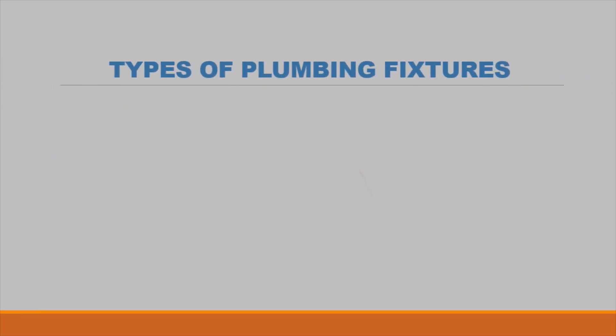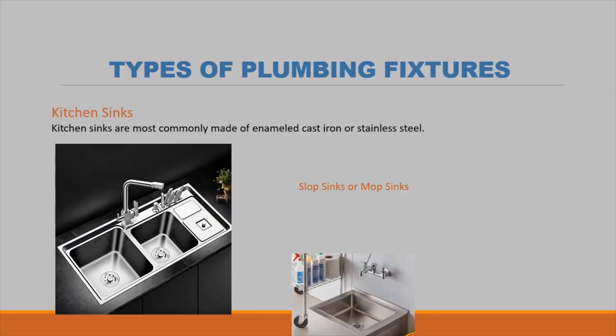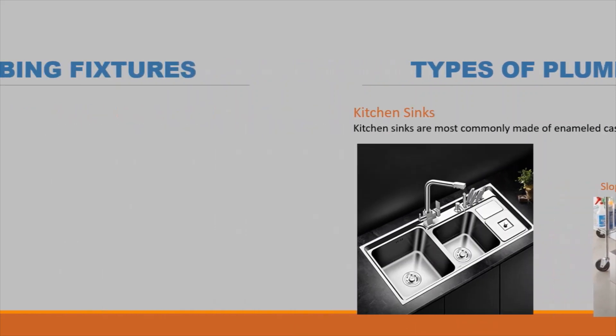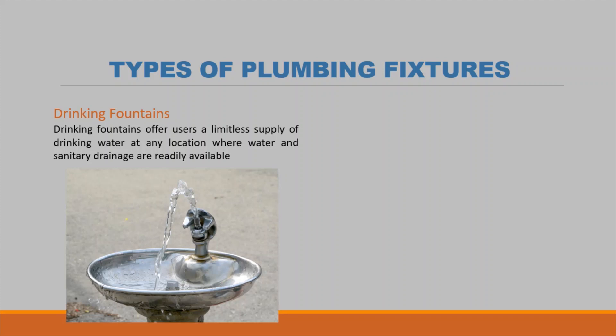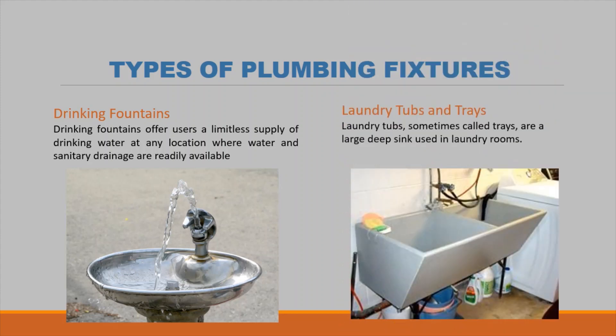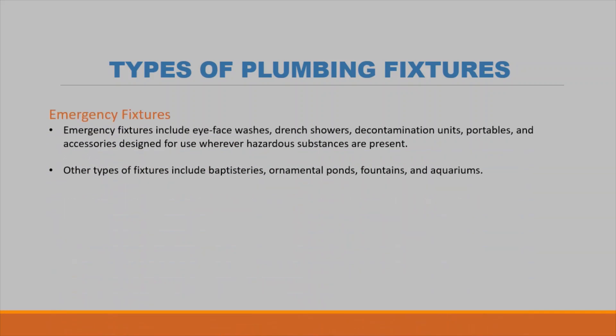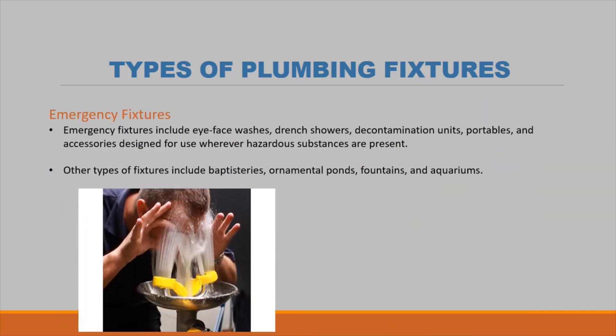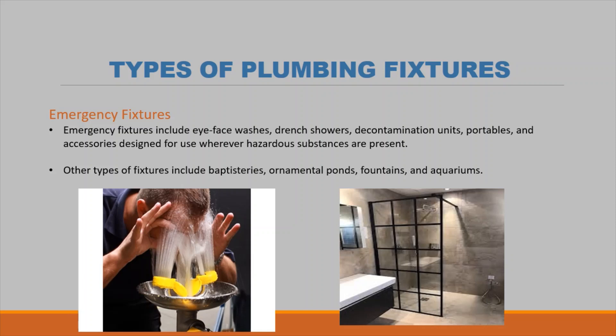Kitchen sinks are most commonly made of enameled cast iron or stainless steel. Drinking fountains offer users a limitless supply of drinking water at any location where water and sanitary drainage are readily available. Laundry tubs, sometimes called trays, are large deep sinks used in laundry rooms. Emergency fixtures include eye-wash stations, drench showers, decontamination units, and portable accessories designed for use wherever hazardous substances are present.